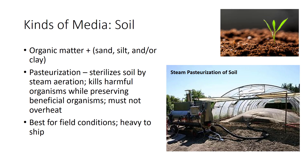This can be accomplished by steam or chemical pasteurization. Steam pasteurization, the most common method, sterilizes the soil by aerating it with steam at a temperature of 140 degrees Fahrenheit for 30 minutes. The soil temperature in turn rises to 180 degrees Fahrenheit, which kills non-beneficial organisms while leaving the beneficial ones alive. You must be careful not to overheat the soil, otherwise beneficial organisms will also be destroyed and other problems may arise.